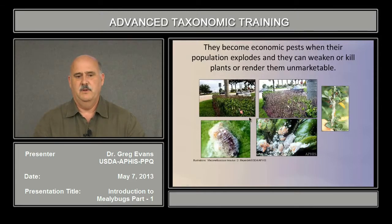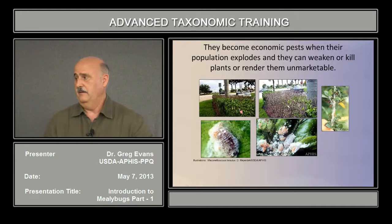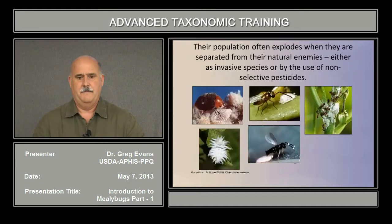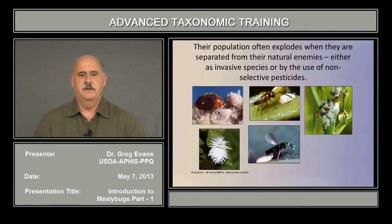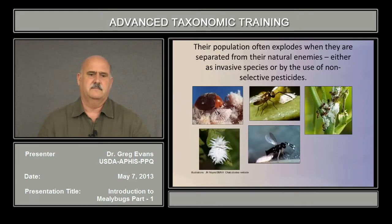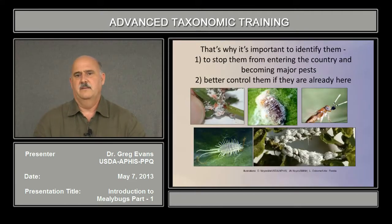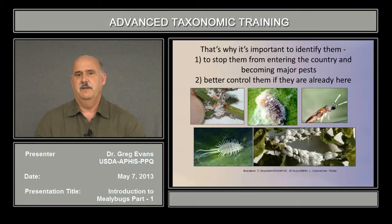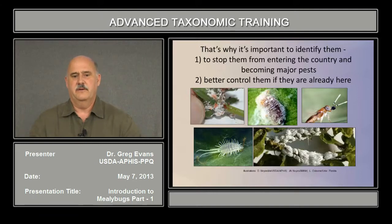They become economic pests when their population explodes and they can weaken or even kill plants, or render them unmarketable. This is an example of a hedge of hibiscus before and after the pink hibiscus mealybug attacked it. Their population often explodes when they are separated from their natural enemies, either as an invasive species or by the use of non-selective pesticides.